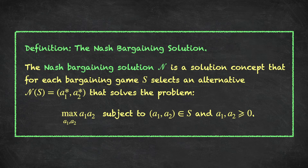So what is the Nash bargaining solution? It's a solution concept we'll denote with this calligraphic N, such that for each bargaining game the Nash solution selects an alternative we'll denote N of S, or (A* 1, A* 2) — a utility level for player 1 and a utility level for player 2 — and these utility numbers are chosen to maximize the product A1 times A2, subject to the conditions that the alternative must belong to the bargaining game S, and the utility levels should be at least the disagreement level 0.